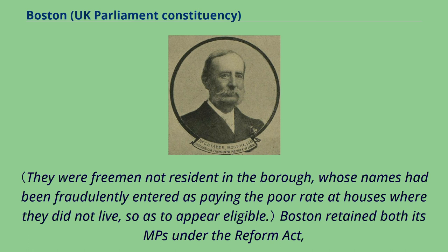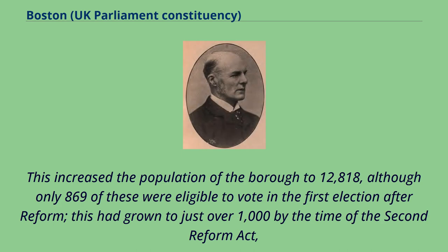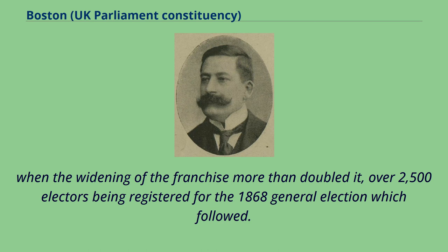Boston retained both its MPs under the Reform Act, but its boundaries were extended slightly, taking in more of the town and part of the neighbouring parish of Skirbeck. This increased the population of the borough to 12,818, although only 869 were eligible to vote in the first election after Reform. This had grown to just over 1,000 by the time of the Second Reform Act, when the widening of the franchise more than doubled it, over 2,500 electors being registered for the 1868 general election.